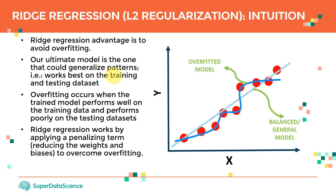Let's assume we have these data points — the red points here — with independent variable X and dependent variable Y. We have two models: one is this dark blue line, which is overfitting the data points, meaning it learns all the details of the training data but fails to generalize on a different dataset. The other is a linear model — a balanced or general model. Overfitting occurs when a trained model performs well during training but very poorly during testing.